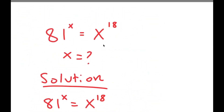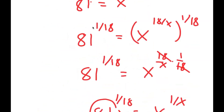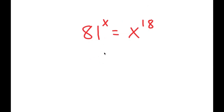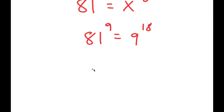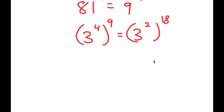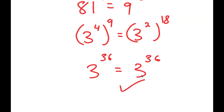Going back to the original equation, let's check if this is right. I have 81 to the power of x equals x to the power of 18, and x equals 9. Plugging in 9 for x, I get 81 to the power of 9 equals 9 to the power of 18. Since 81 equals 3 to the power of 4 and 9 equals 3 squared, I get 3 to the power of 4 to the power of 9 equals 3 squared to the power of 18. That gives 3 to the power of 36 equals 3 to the power of 36. So this is correct.